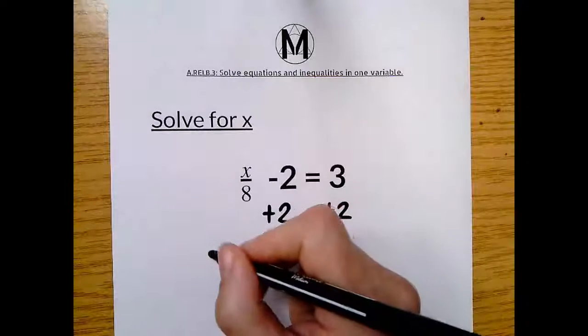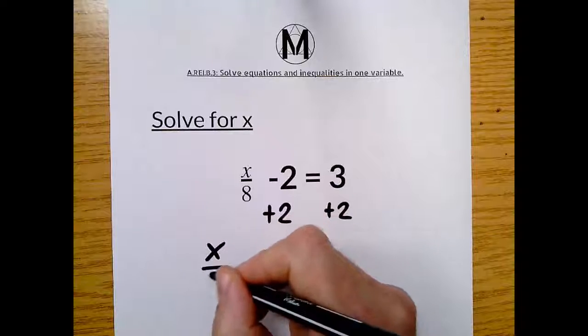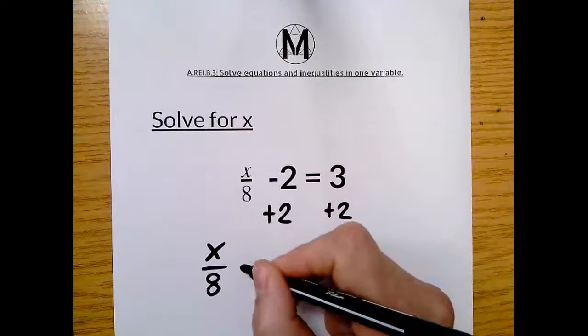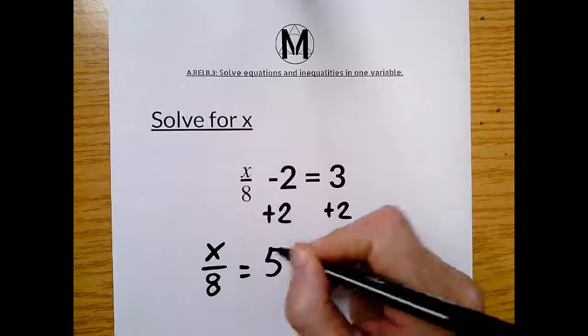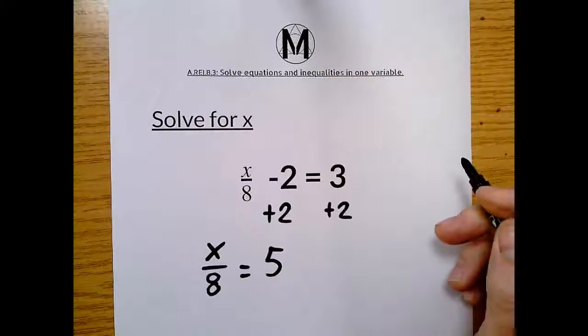Okay, great. So now we have x over 8 or x divided by 8 equals 5 because 3 plus 2 is 5. All right, no problem.